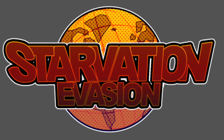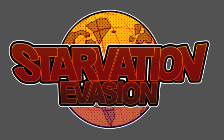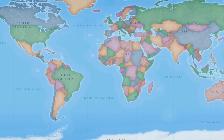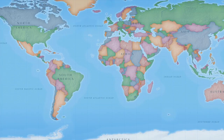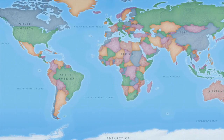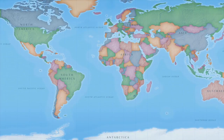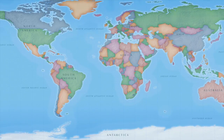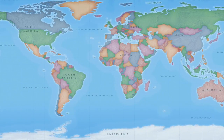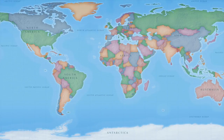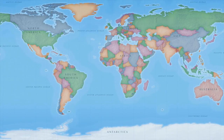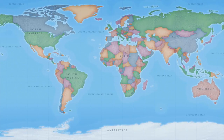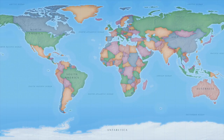Starvation Evasion is an educational computer game designed for one or multiple players. Players assume the role of state or regional policymakers governing, regulating, stimulating, and facilitating agricultural activities within their region of the United States, with game expansions allowing players to represent and explore the interests of other countries.